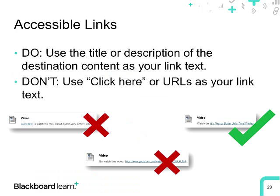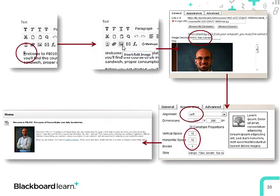This is a good time to talk about accessible links in your course. When creating hyperlinks, do use the title or description of the destination content as your link text. Don't use 'Click Here' or the URL itself. For someone using a screen reader navigating through links on a page, 'Click Here' is meaningless. Similarly, a raw YouTube URL like www.youtube.com/watch?v=V3Zagv is meaningless. Use the destination content title as your link text — that's just right.